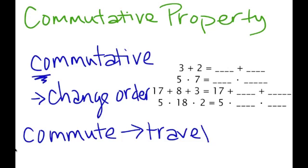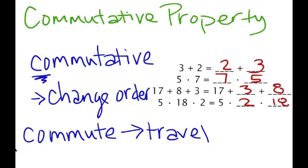So in this first example, 3 plus 2, we could also write that as 2 plus 3. 5 times 7 can also be written as 7 times 5. 17 plus 8 plus 3 can also be written as 17 plus 3 plus 8, and you can see where that's useful because 17 plus 3 is 20 and then we just add the 8. For the last example, 5 times 18 times 2 can also be written as 5 times 2 times 18, making it easier because 5 times 2 is 10 and then we multiply by 18. That's the commutative property.